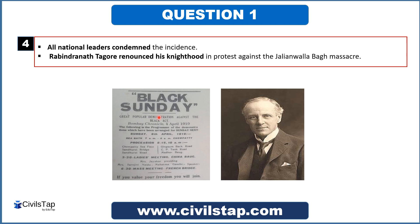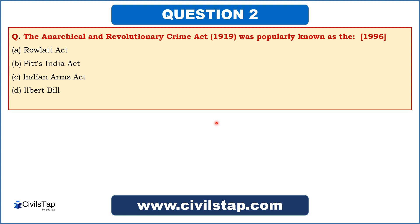There is a newspaper cutting showing the demonstration against the Rowlett Act, and a picture of Justice Sidney Rowlett, after whom the act is named, who was also the chairman of that committee. Now let's move to the next question. This question came in the prelims of 1996: 'The Anarchical and Revolutionary Crime Act 1919 was popularly known as the...' Options are: Rowlett Act, Pitt's India Act, Indian Arms Act, and Ilbert Bill.